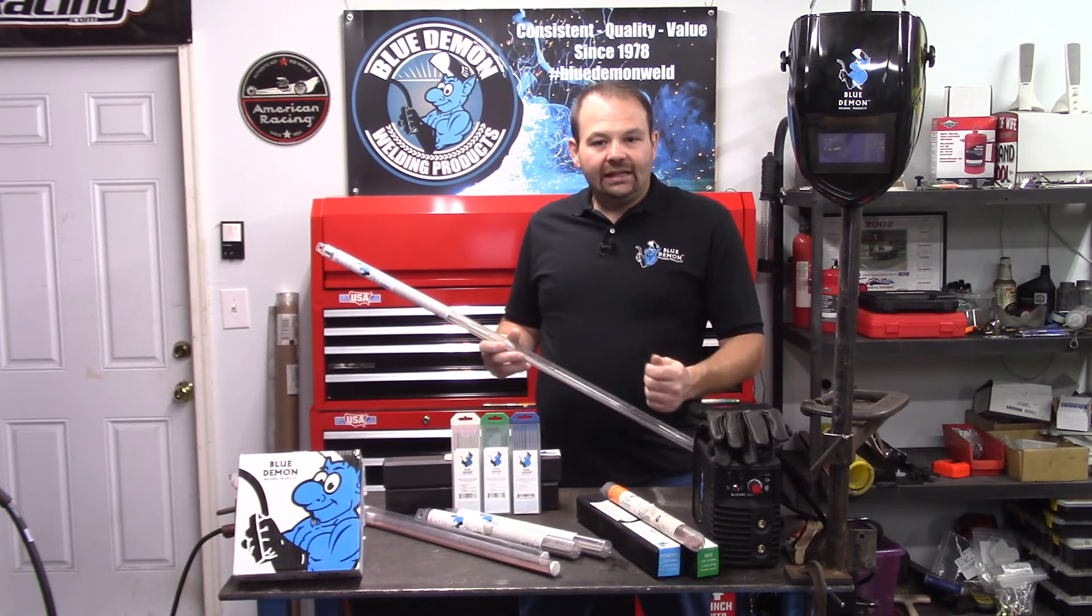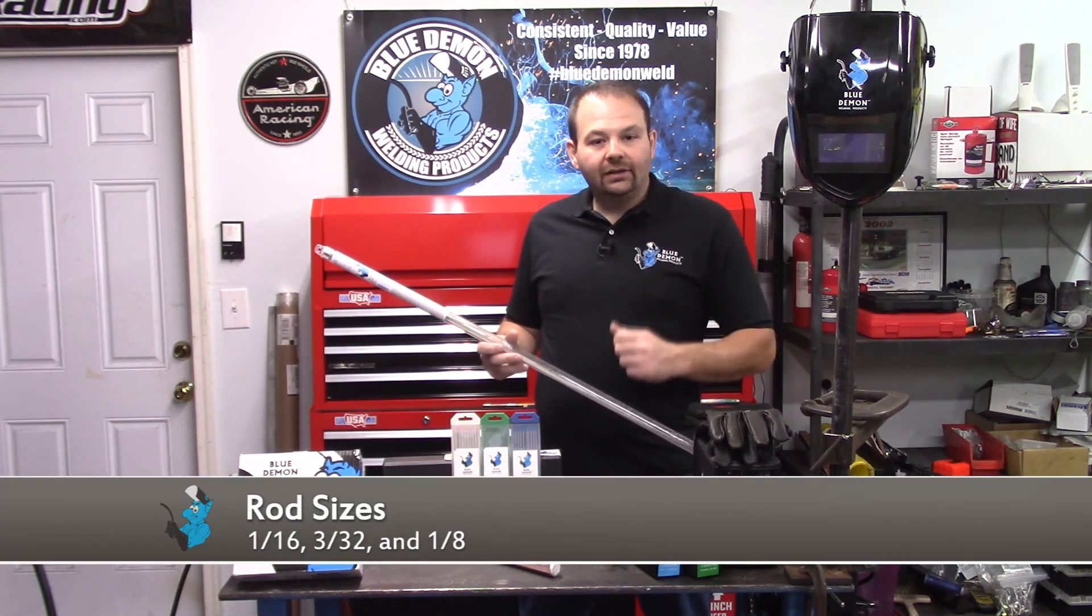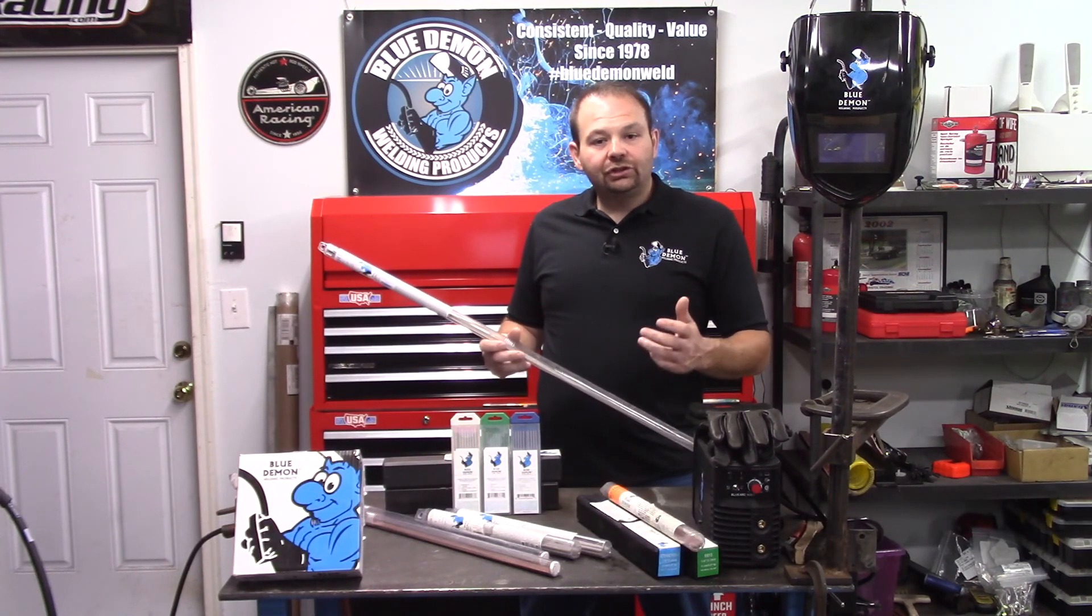Blue Demon offers ERTI in rod sizes 1/16th, 3/32nd, and 1/8th. Available shielding gases include argon, helium, or a combination of the two.